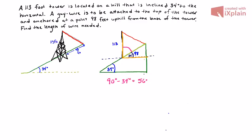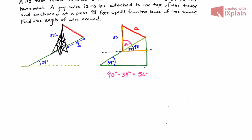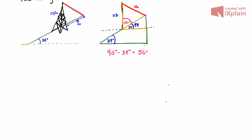I'm going to call this side a—this is what I want to find out. I want to find the length of the wire that I need to attach from the tower and anchor to the hill. I'm going to move this up and create a little bit more room for myself.